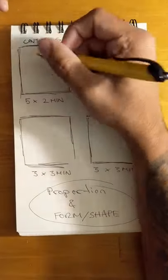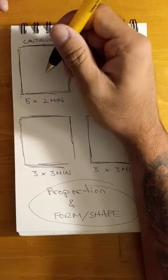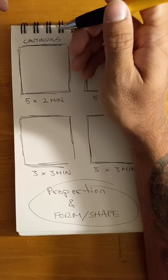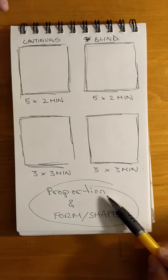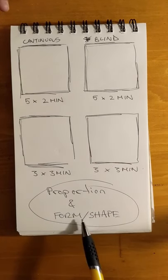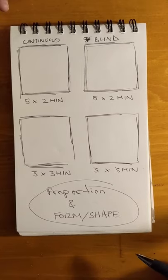So, the rules for continuous are that you can look at what you're drawing, but you cannot lift your drawing tool. The reason that you want to do this is because we want to start to capture proportion, form, and shape as accurately as possible.